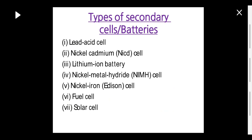All the above are primary batteries. Now we will see secondary batteries, which are rechargeable batteries where the chemical reaction can be reversed. The types of secondary batteries are: first, lead acid cell; second, nickel cadmium cell; third, lithium ion battery; fourth, nickel metal hydride cell; fifth, nickel iron cell; sixth, fuel cell; seventh, solar cell.